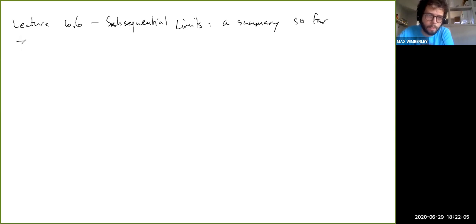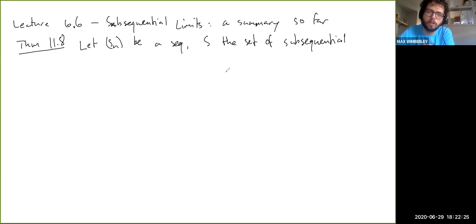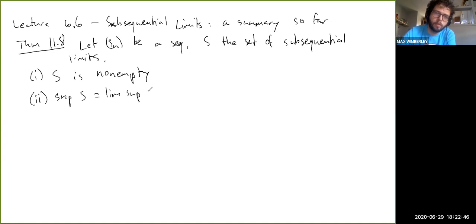This is theorem 11.8 in the book. Let Sn be a sequence and S the set of subsequential limits. Then there are three things we can say. S is non-empty. Two, the supremum of S is the lim sup of Sn. And similarly,